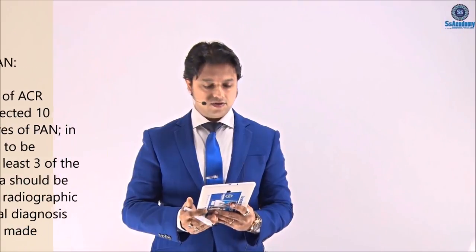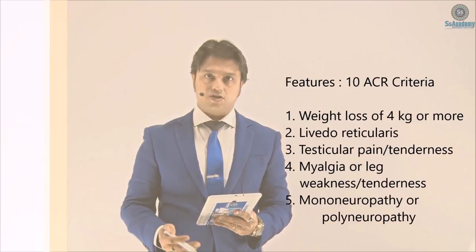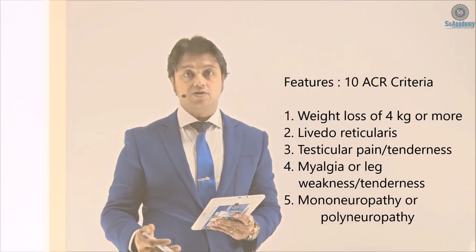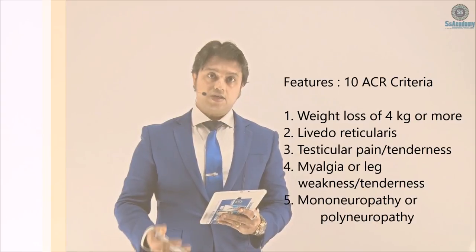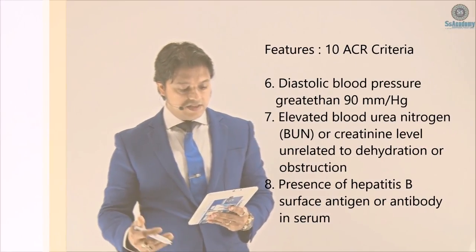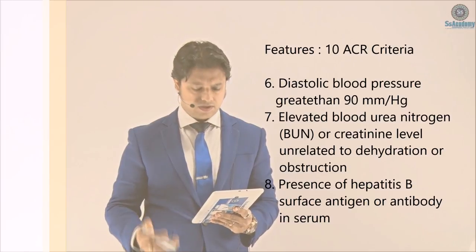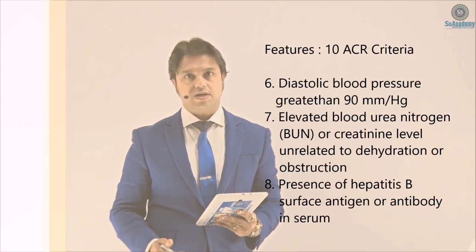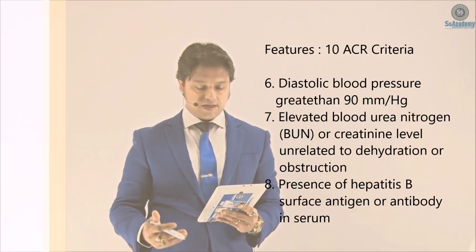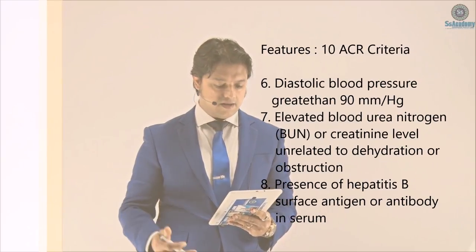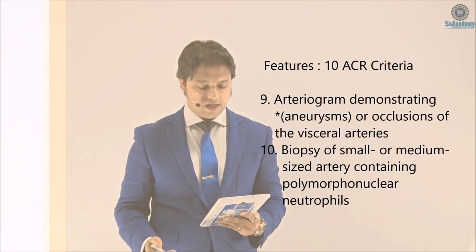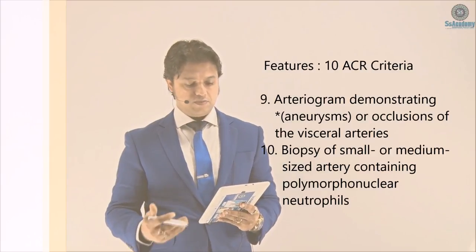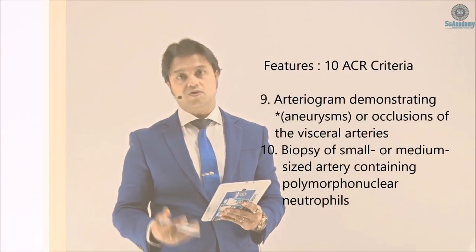The 10 diagnostic criteria include: weight loss of 4 kg or more; livedo reticularis; testicular pain or tenderness; myalgia, leg weakness, or tenderness; mononeuropathy or polyneuropathy; diastolic blood pressure greater than 90 mmHg; elevated blood urea nitrogen or creatinine level unrelated to dehydration or obstruction; presence of hepatitis B surface antigen or antibody in serum; arteriogram demonstrating aneurysms or occlusion of the visceral arteries; and biopsy of small or medium-sized artery containing polymorphonuclear neutrophils.